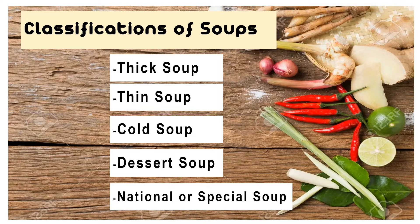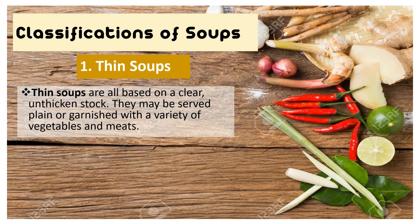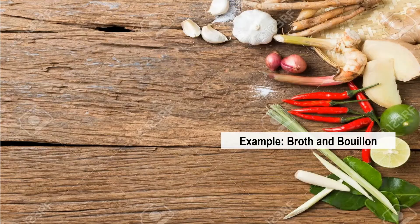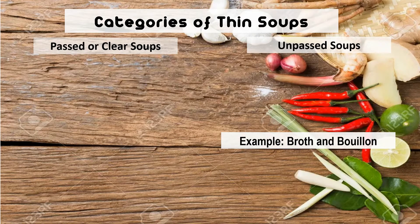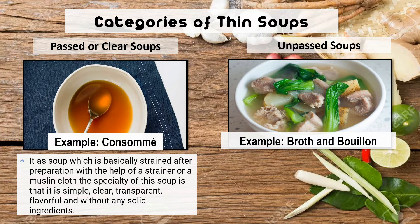The first classification of soups is the thin soups. Thin soups are all based on clear, unthickened stock. They may be served plain or garnished with a variety of vegetables and meats. It is further divided into two categories: the passed soup or clear soup, and un-passed soup. For the passed or clear soup, we have the consommé. And for the un-passed soup, we have the dish called lagang baka, or broth and bouillon.